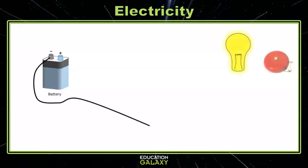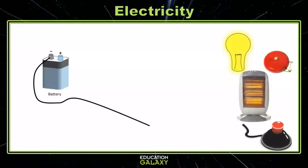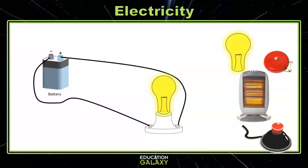This could be a light, a bell, a buzzer, or even a heater. But let's use the light bulb. So we attach our device to the wire, and now we have to make a loop for the current to travel back to the battery. Now this circuit turns our light on.